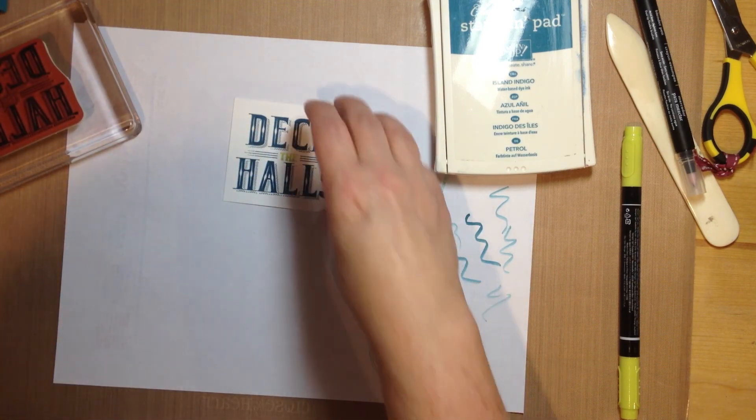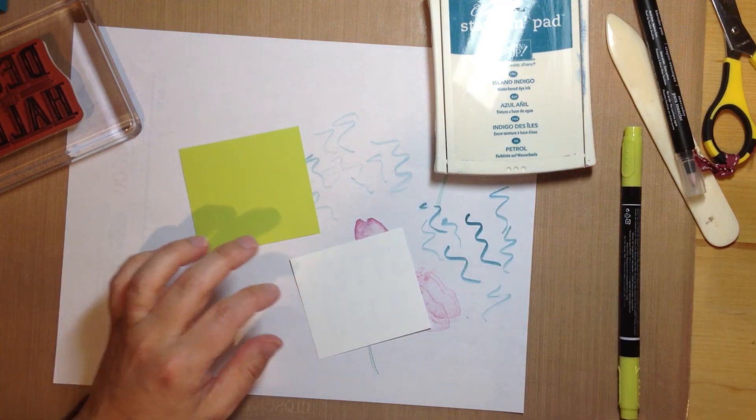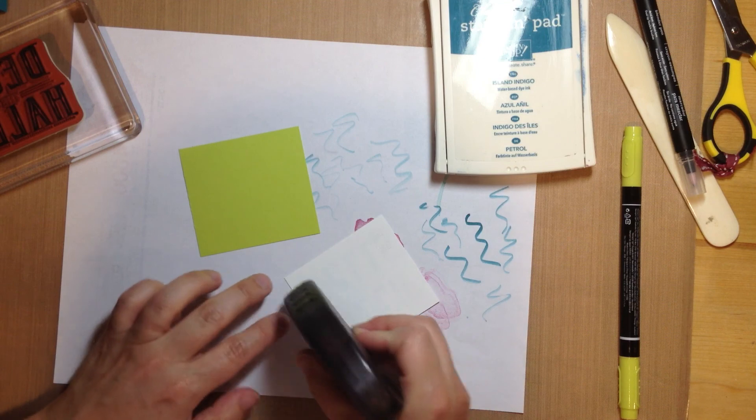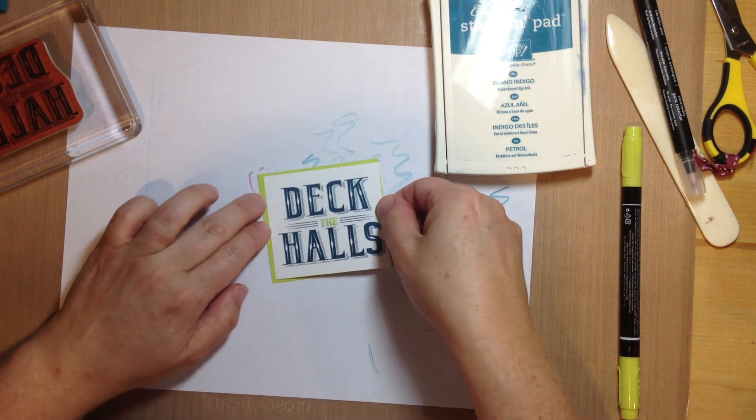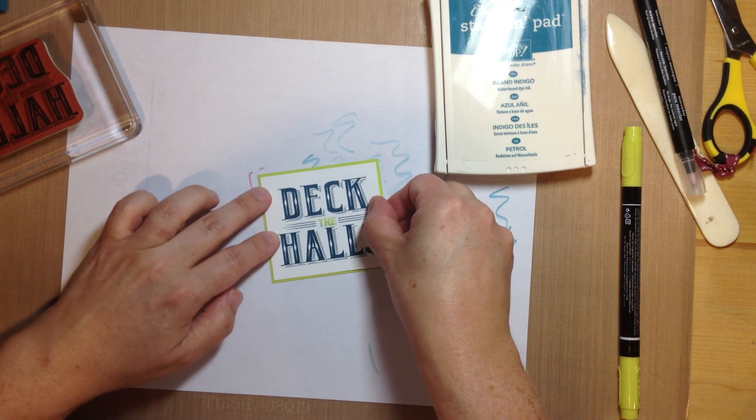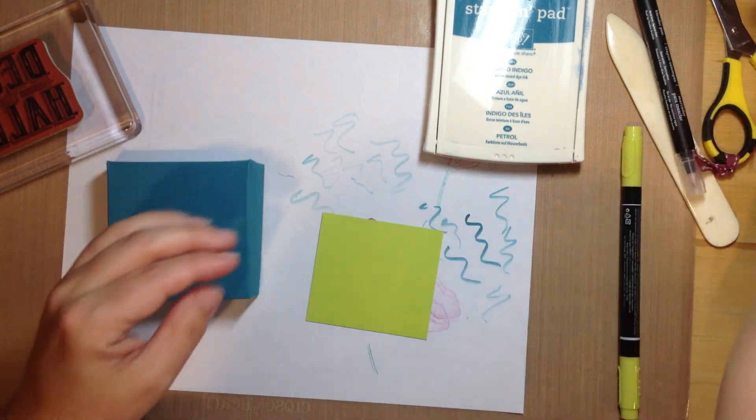And then what I did was I mounted that to a piece of Lemon Lime Twist. I think the white measures 2 1/2 by 2 3/4. And then the Lemon Lime Twist measures 2 5/8 by 2 7/8. And then this is going to go on here with dimensionals.